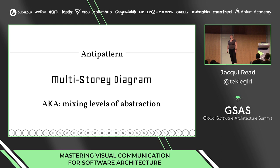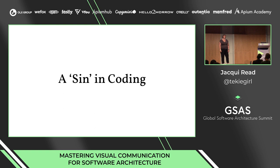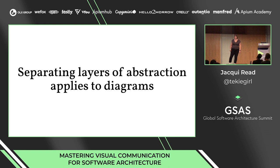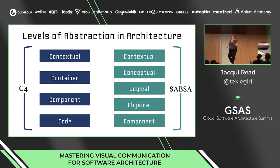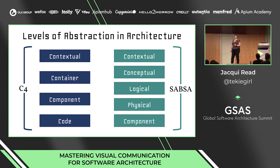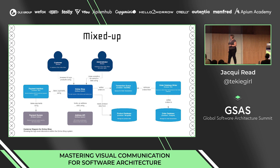That leads us to another pattern — actually an anti-pattern — called multi-story diagram, which is about mixing your levels of abstraction. If you code, you know this is a bit of a sin in coding: you shouldn't mix levels of abstraction. The same applies to diagrams. With your architecture levels, they're slightly different. Here are two examples: on the left we have C4 — contextual, container, component, and code. And some of you may have heard of the SABSA framework, a security architecture framework with five layers: contextual, conceptual, logical, physical, and component.